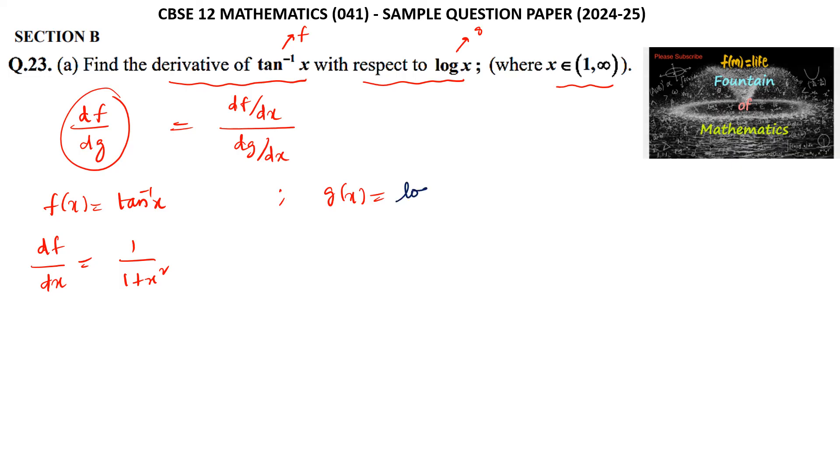log x for x is greater than 1, and g dash of x, that is dg by dx, is equal to 1 upon x. Now df by dg is equal to df by dx upon dg by dx.